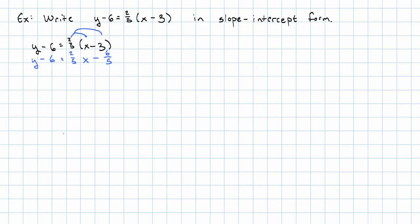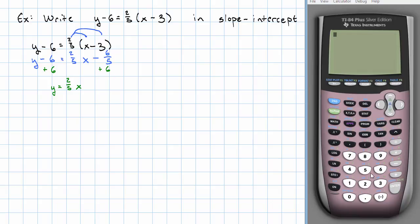OK. And now we're solving for y. We'll add 6 to both sides. And we'll get y equals 2 fifths x. What's this going to work out to? We'll have negative 6 fifths plus 6. Make that a fraction, just because it looks weird to have both fractions and decimals in the same equation. So plus 24 fifths. 2 fifths x plus 24 fifths is our equation in slope-intercept form.